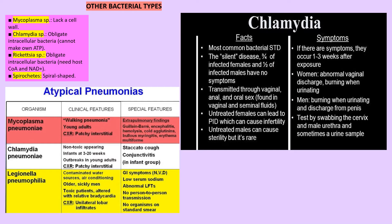Pseudomonas aeruginosa produces a blue-green pigment in culture and is the most common bacteria causing pneumonia in cystic fibrosis patients, burn infections, swimmer's ear, and osteomyelitis in diabetic patients. Haemophilus influenzae causes epiglottitis, while H. aegyptius causes acute conjunctivitis (Koch-Weeks bacillus). Legionella causes pneumonia in older smokers and via air conditioning. Bordetella pertussis causes whooping cough. Zoonotic bacilli include Brucella causing undulant fever, Francisella tularensis causing tularemia, and Yersinia pestis causing plague transmitted by fleas and rodents with F1, V, and W antigens. Pasteurella multocida causes cellulitis from cat or dog bites.